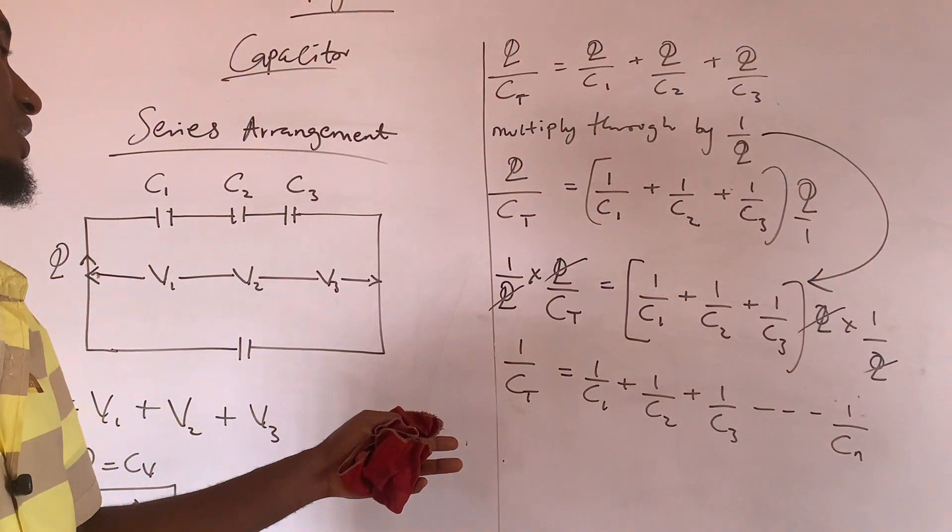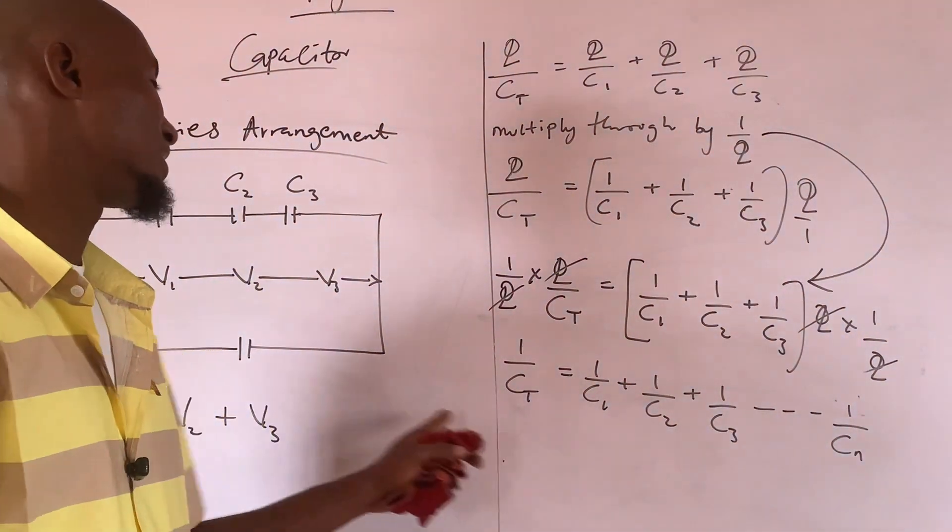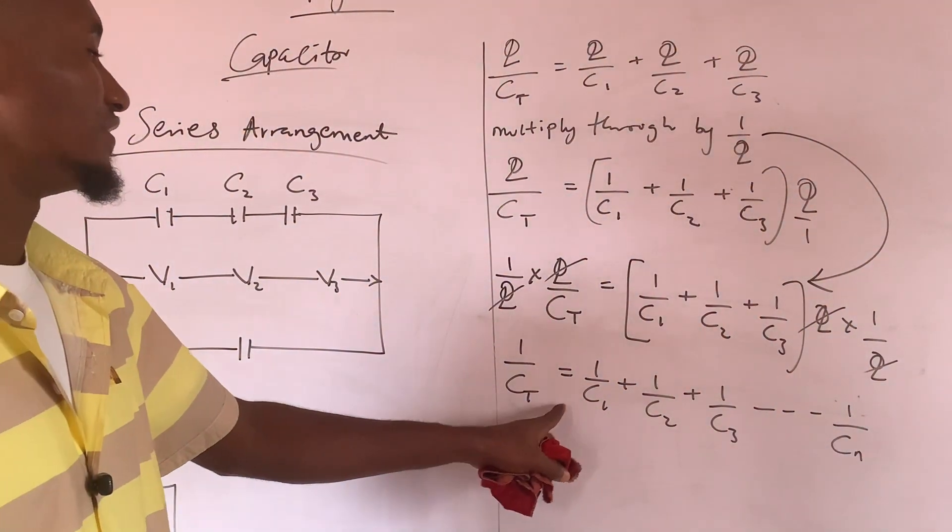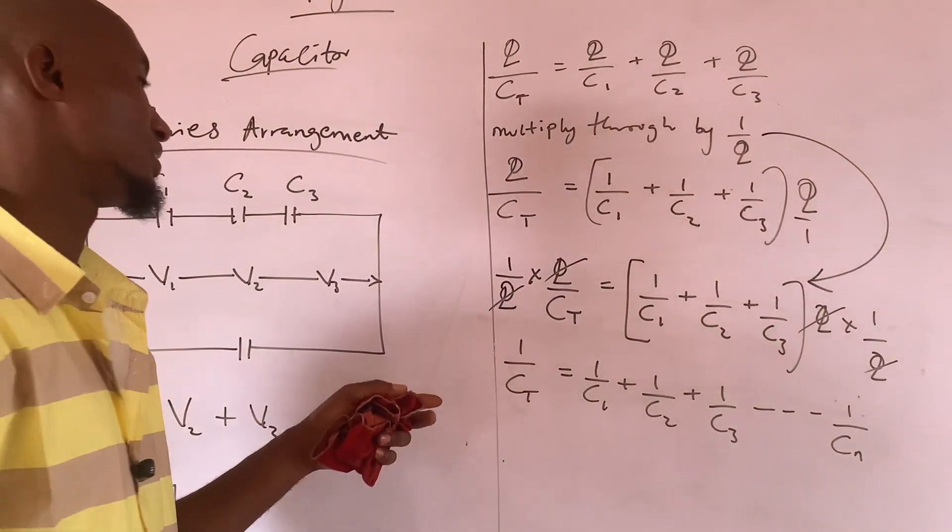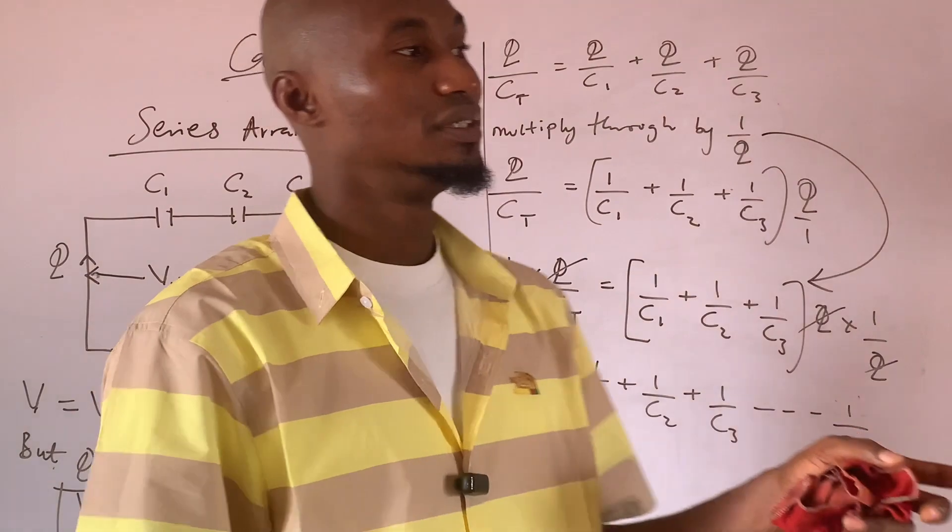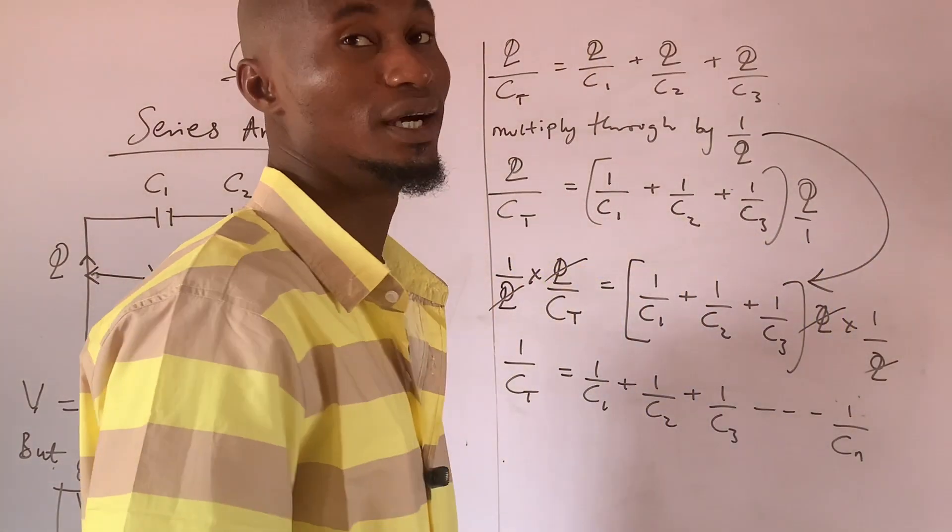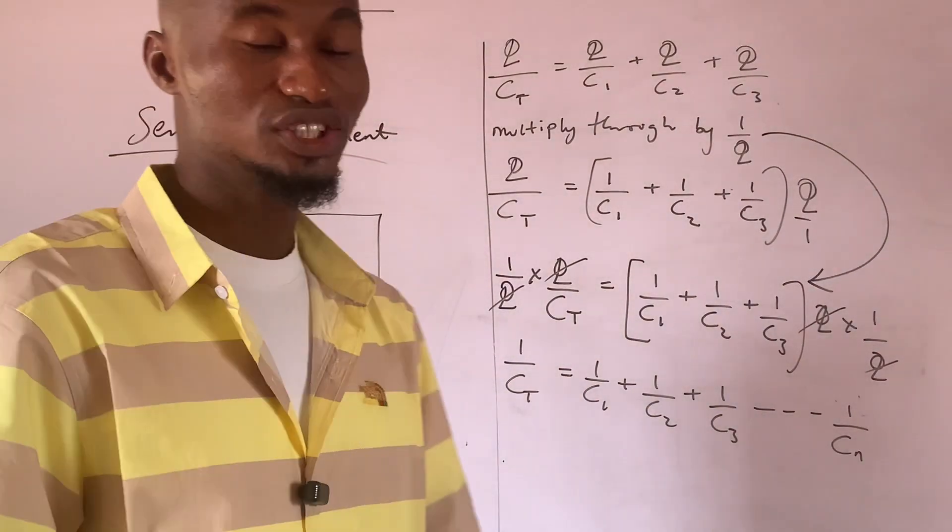T 1 over C2, and that is it. Infinity. Likewise, parallel arrangement. So have you seen that this one now, capacitance of capacitor in series, is the support of the individual of our capacitors, while parallel is opposite to this, is opposite to this.